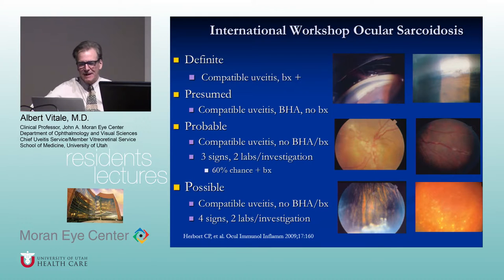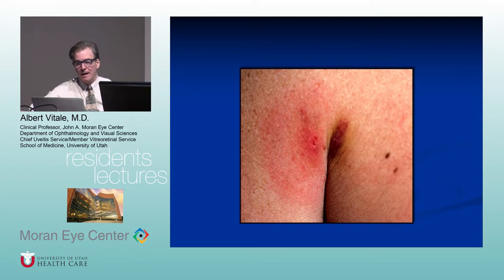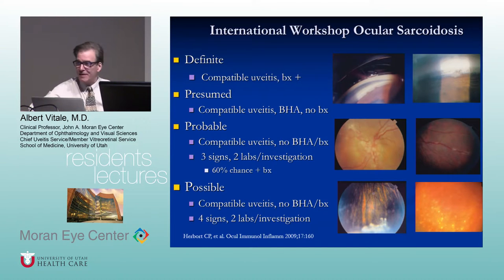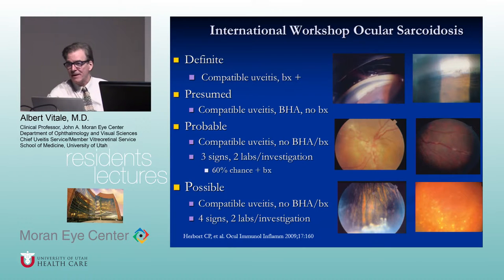In terms of characteristic signs, tent-like anterior synechiae are common in sarcoidosis. You can have tache de bougie — candle wax drippings — which are exudates around the veins. Periphlebitis is a very common finding. You can also have accumulations of inflammatory exudates — snowballs — in the inferior vitreous. Not infrequently there are whitish chorioretinal spots, particularly in the inferior periphery.